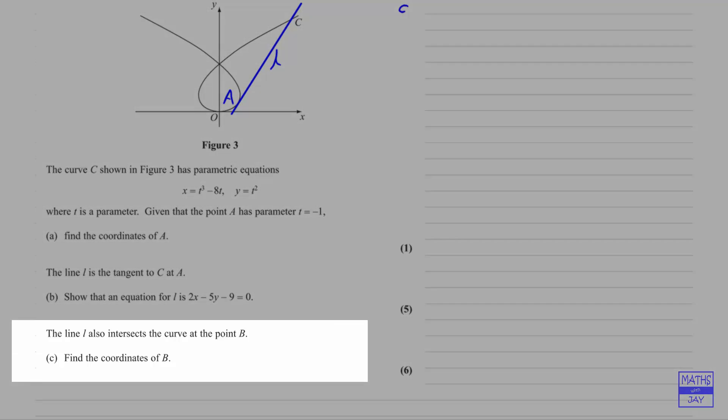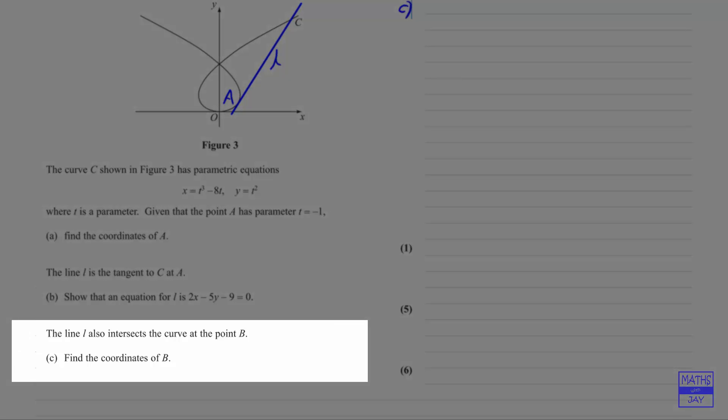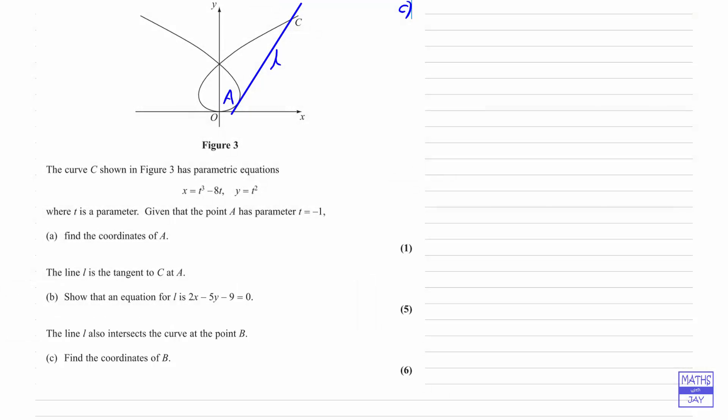In part C, we've been told that the line L also intersects the curve at the point B. Remember that last time we were putting in the line L as a tangent to the point A, and now we're being told that the point where it intersects the curve again is the point B, and we're trying to find the coordinates of B.